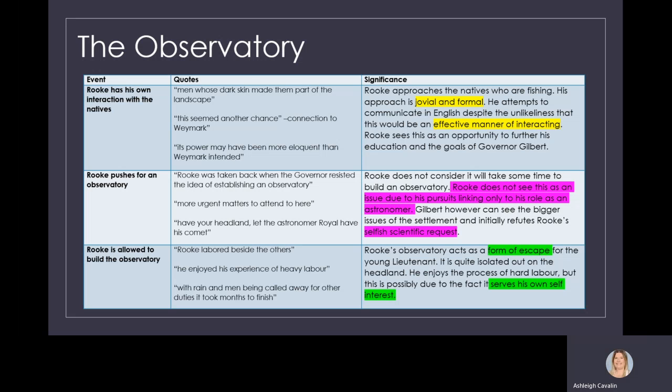Rook sees this as an opportunity to further his education and the goals of Governor Gilbert and the King. Rook does not consider that it will take some time to build an observatory. Yet he still approaches Governor Gilbert to have men and resources assigned to this task. This only links to his pursuits as an astronomer. Remember that this is a new settlement with no shelter even for the convicts. Gilbert, however, can see the bigger picture and initially refutes Rook's selfish scientific request. However, Rook does use some language to convince Governor Gilbert to build him this observatory.